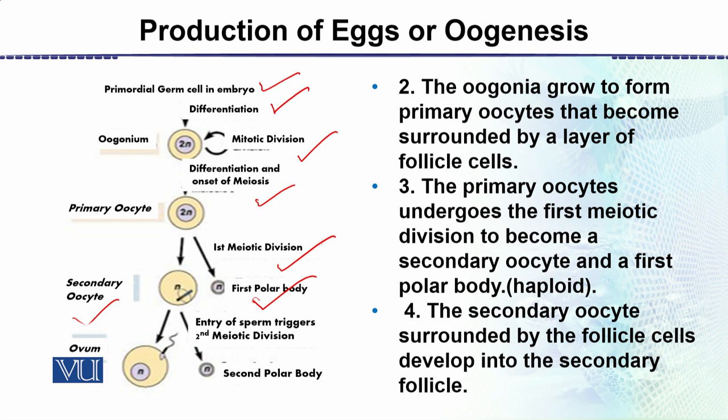In humans, at this stage ovulation occurs. Then the second meiotic division happens just at the entry of the sperm — the process quickens and the second polar body is formed. This completes all five stages which we have been discussing.